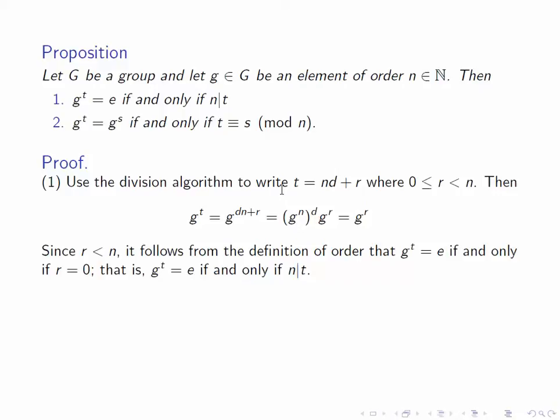Now since r is less than n, it follows from the definition of the order of g that g to the r is equal to e only if r equals 0. This implies that g to the t is equal to the identity if and only if r equals 0, and that of course means if and only if n divides t. So g to the t is the identity if and only if t is divisible by n.